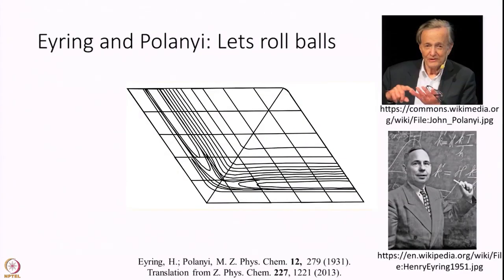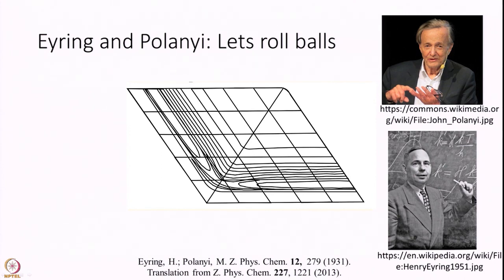I want to tell you about work from 1931 introduced by two famous people, Eyring and Polanyi. These two gentlemen were instrumental in understanding rate theories in many different ways. In this 1931 paper — an English translation is also available — the original paper is in German. They were the first people to do something very interesting: they noted that Born and Oppenheimer had introduced the idea of potential energy surfaces in the late 1920s.